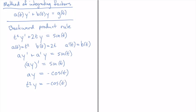The antiderivative of sine is −cos(t) plus an arbitrary constant, so let me put that back in. Now we can solve for y(t): y(t) = −cos(t)/t² + c/t². That is the general solution to this equation. The important thing is that the left-hand side was already a result of a product rule.